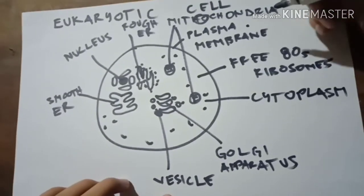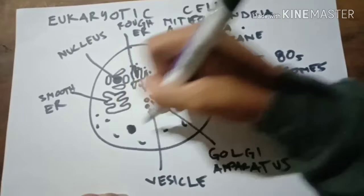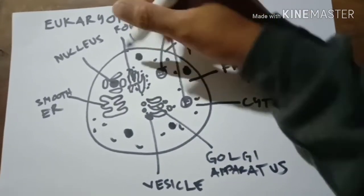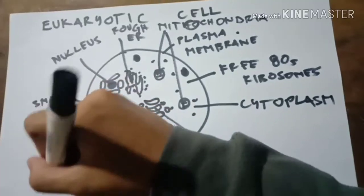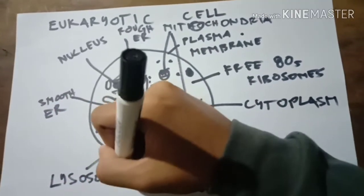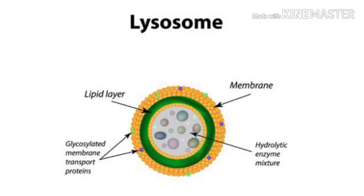The last part of the eukaryotic cell is the lysosome. One of the key organelles involved in digestion of enzymes and waste removal is the lysosome, and it is also called the stomach of the cell.